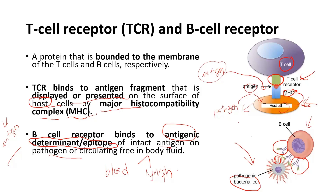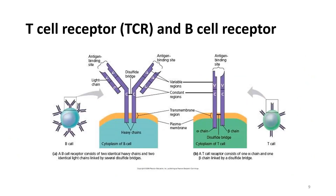By now you should understand the difference between the T cell receptor and B cell receptor in terms of how they bind to antigen. Shown here is the structure of the T cell receptor and B cell receptor. The B cell receptor consists of four polypeptide chains: two heavy chains and two light chains. The light chains are shorter than the heavy chains. They are bonded together by disulfide bridges.